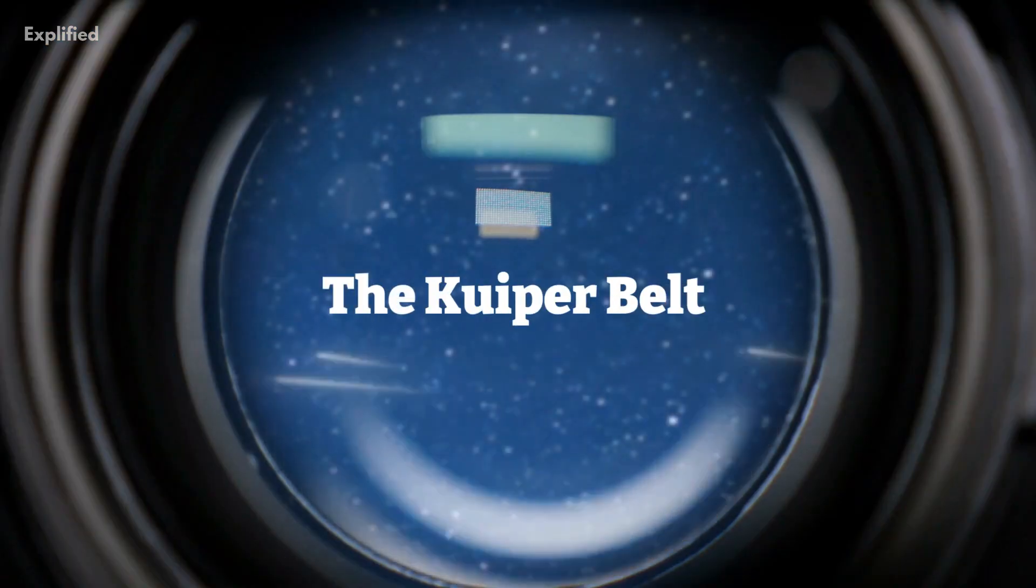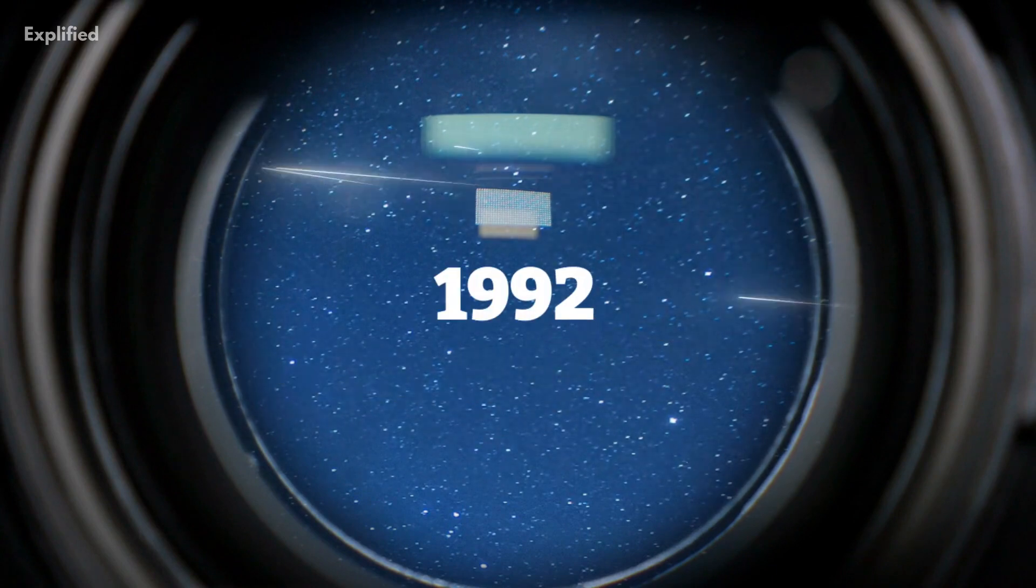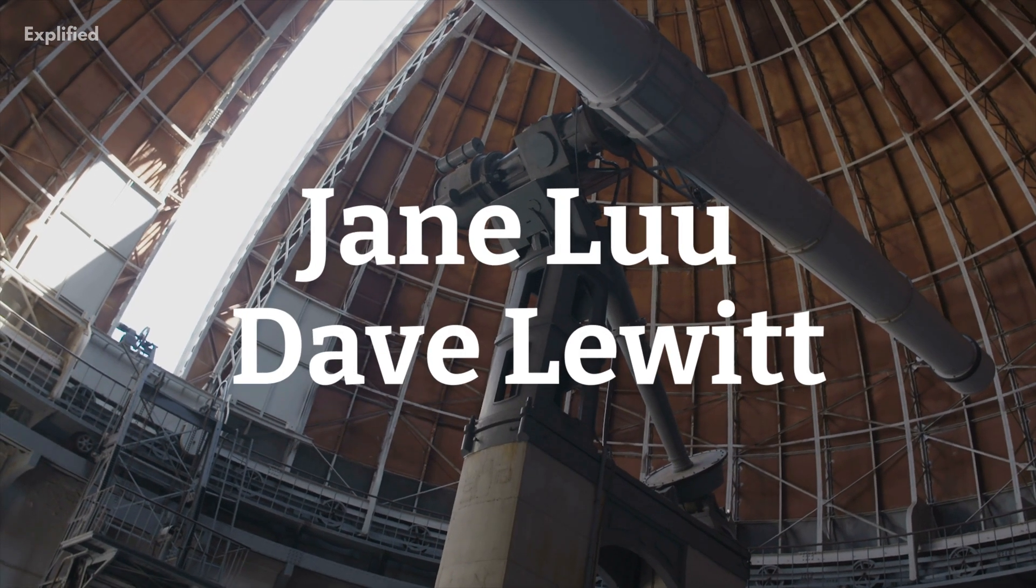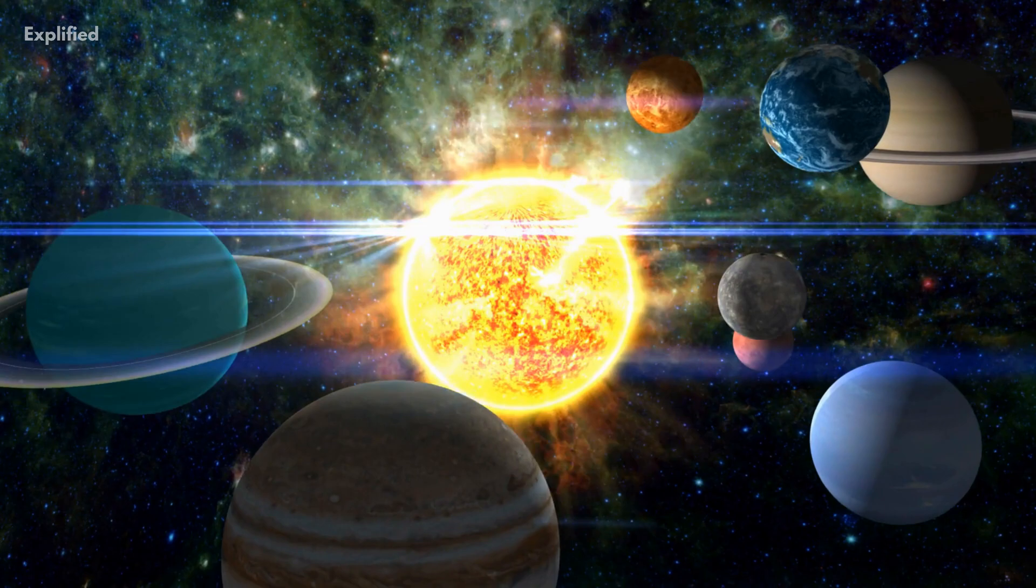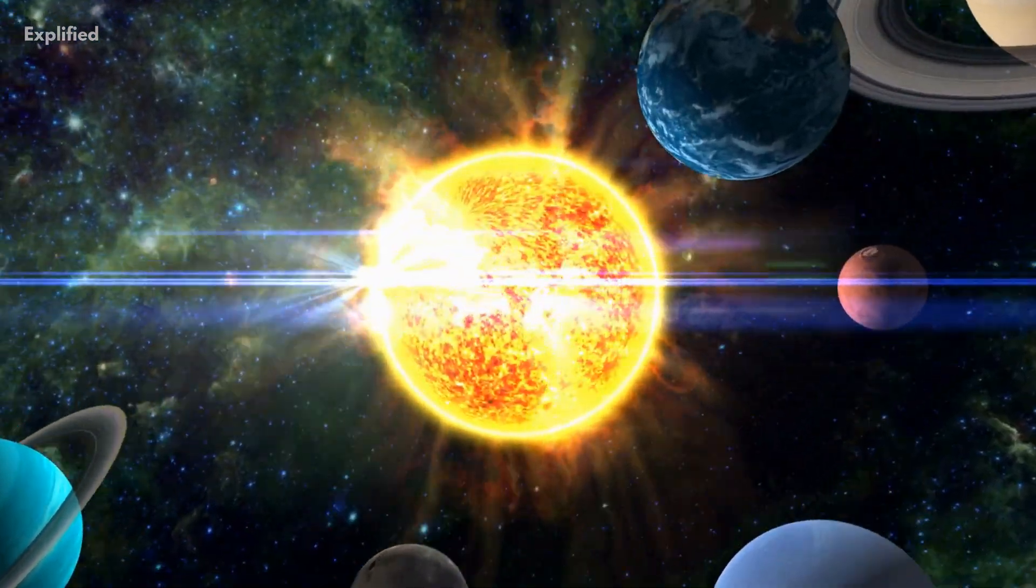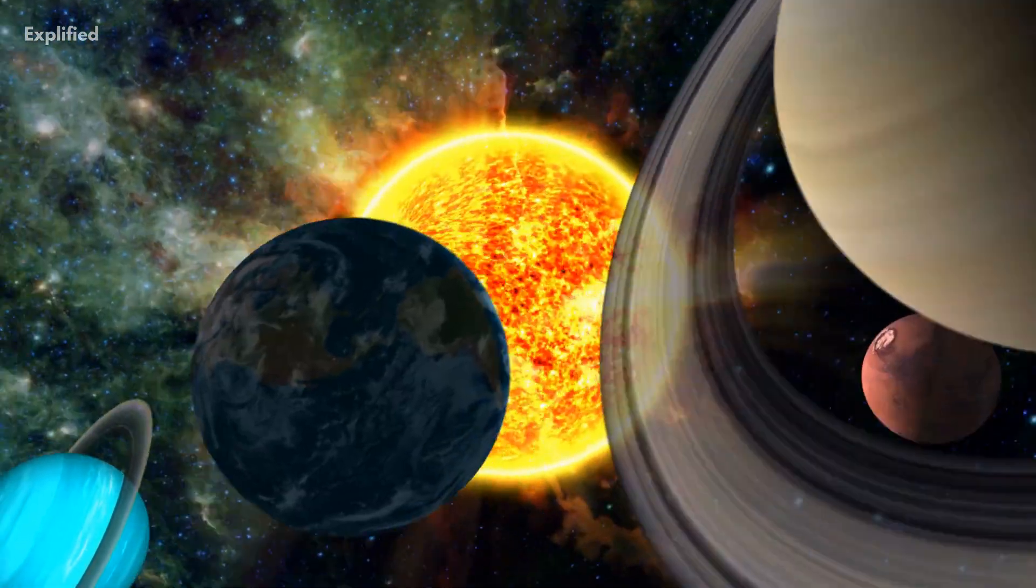The Kuiper Belt was discovered in 1992 by astronomers Jane Liu and Dave LeWitt. Scientists believe that they are the remnants of the early history of our solar system. It is one of the largest structures in our entire solar system and it is almost shaped like a donut.